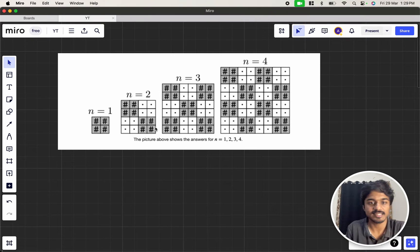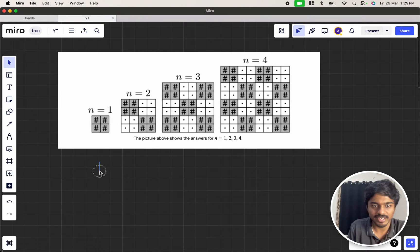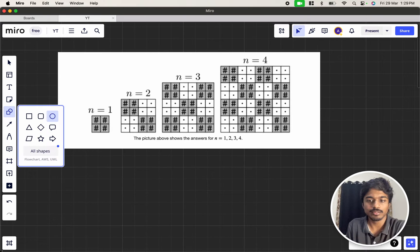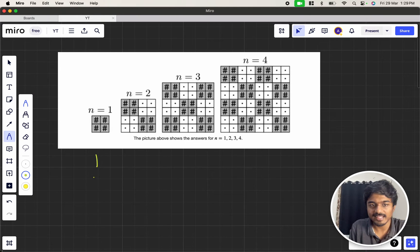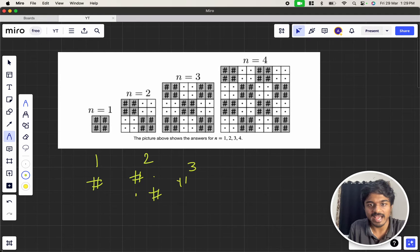Let's try to understand this. If n is 1, I can simply keep hash - everything is like a set of four boxes. If it is 2, it will be hash dot and dot hash. If it is 3, it is hash dot hash, dot hash dot, and hash dot hash.